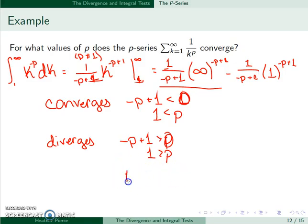We'll notice if 1 is equal to p, this is the harmonic series, which will also diverge. So in general, we've decided that this series converges as long as p is greater than 1.